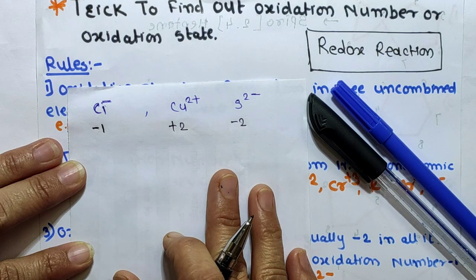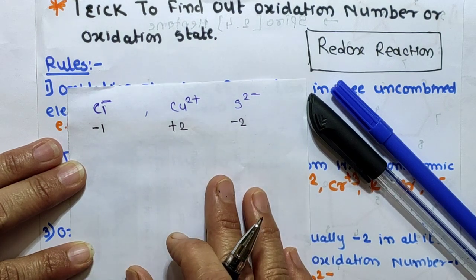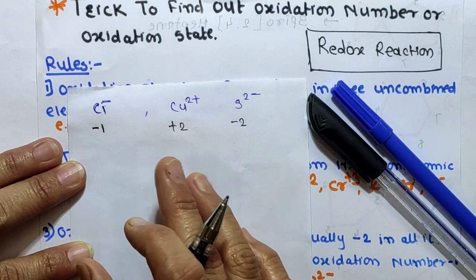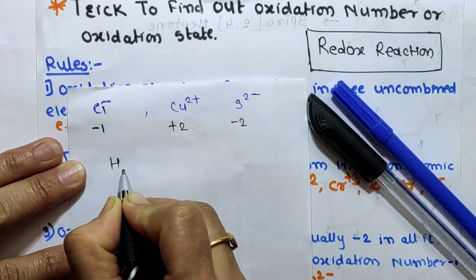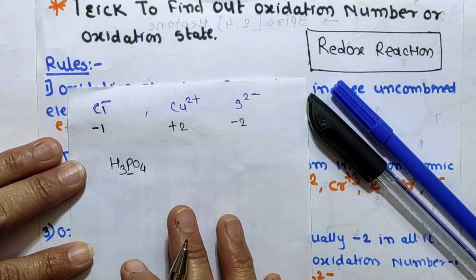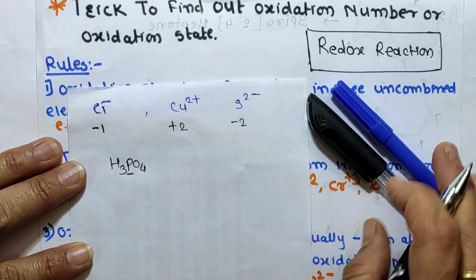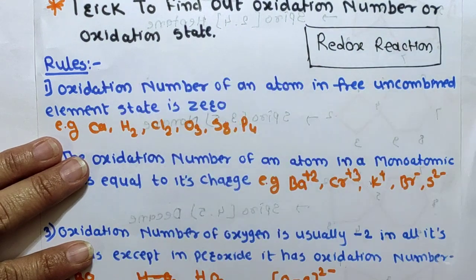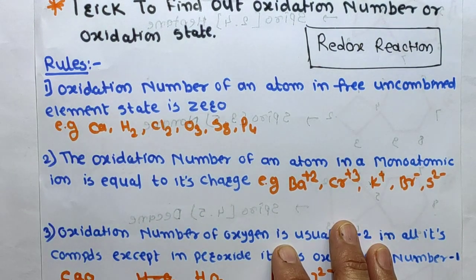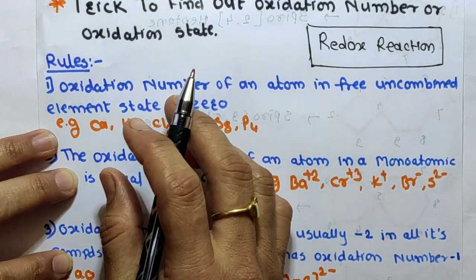But for polyatomic molecules or polyatomic ions, this is why we need to find the oxidation number. For example, we need to find the oxidation state in HPO and similar polyatomic species — this is why we need the concept of oxidation number.